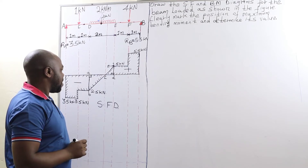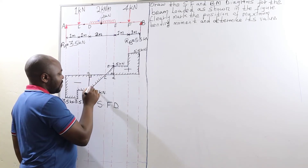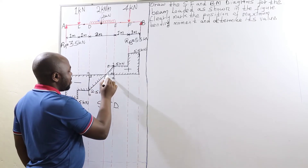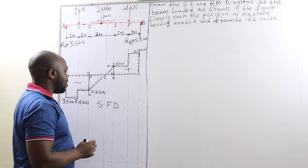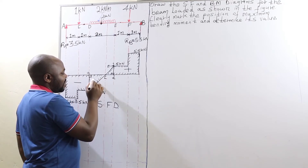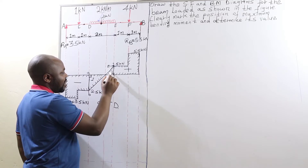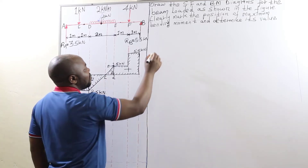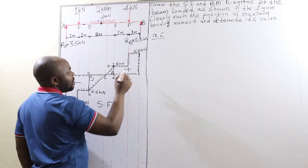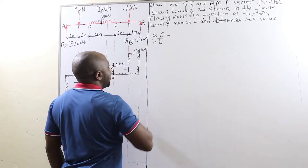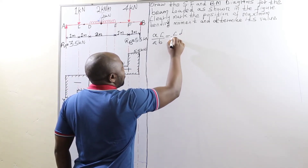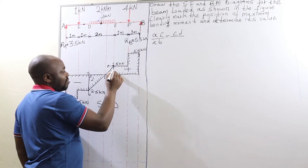Using the similarity method, this is the base of triangle 1 and this is its height; this is the base of triangle 2 and that is its height. Therefore, the base of triangle 1, which is AC, divided by its height, which is AB, will be equal to the base of triangle 2, which is CD, all over the height of triangle 2, which is DE.